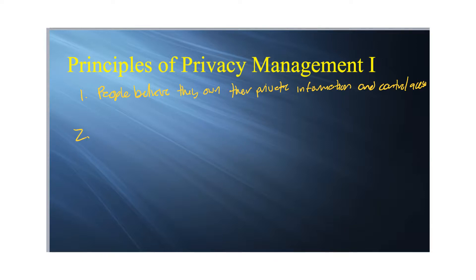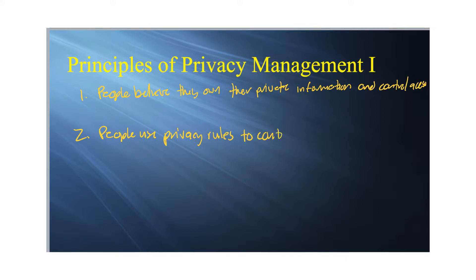The second principle is that because people believe they have the right to control the boundaries surrounding their private information, the way they exercise that control is through the use of privacy rules — decision criteria for revealing or concealing information. In short, people use privacy rules to control boundaries around private information.